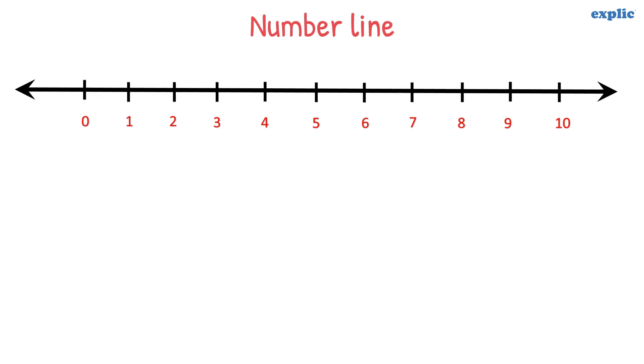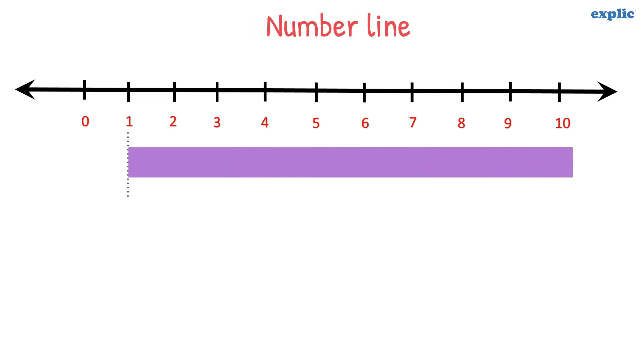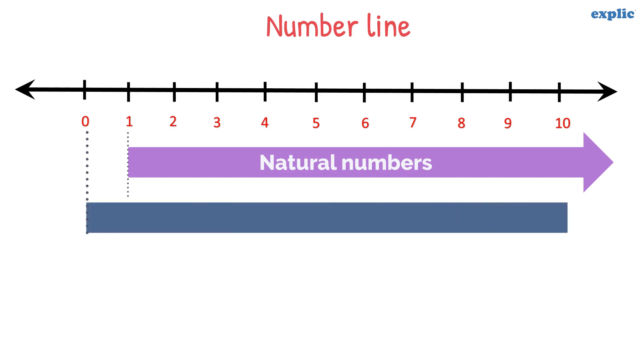As we know, a number line is a straight line with numbers placed at an equal interval. On the number line, all numbers starting from one are natural numbers, and all numbers starting from zero are whole numbers.